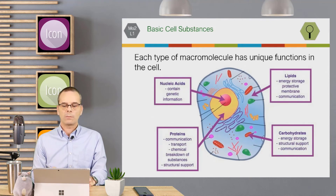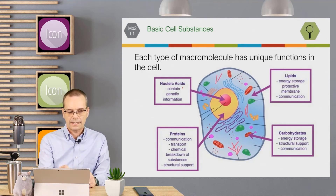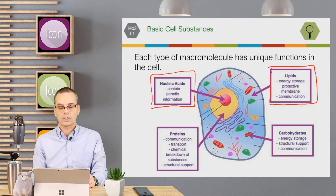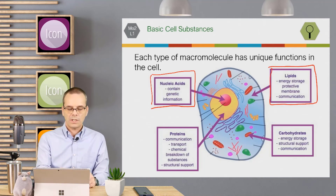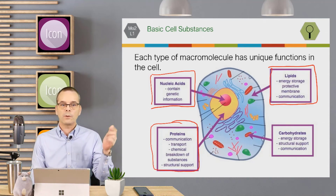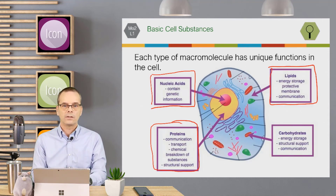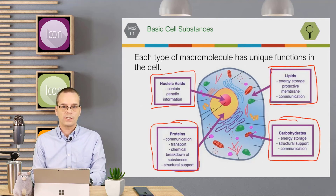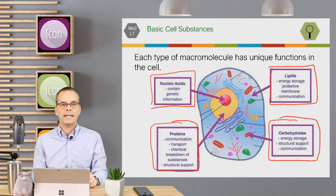Each type of macromolecule has different functions in the cell. Nucleic acids contain genetic information. Lipids are for energy storage and also for communication. Proteins are for communication, transport, chemical breakdown, and structural support inside the nucleus or the cell. And finally, carbohydrates are also for energy storage, communication, and structural support. All of them have these different functions within the cell.